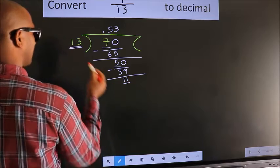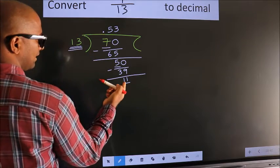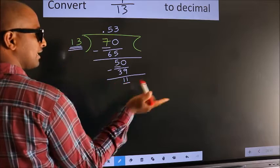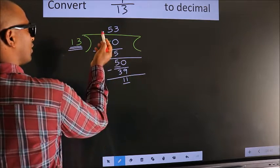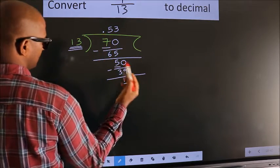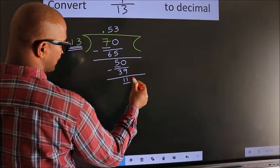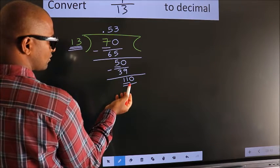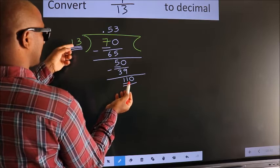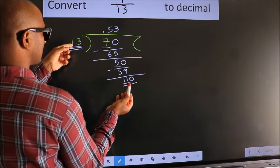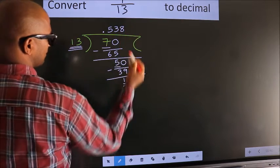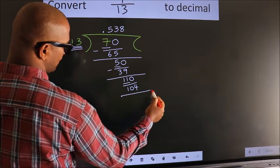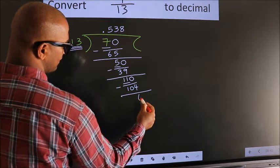Here 13. 11 is smaller than 13, and we already have the decimal, so we can directly take 0, making it 110. A number close to 110 in the 13 table is 13 eights — 104. Now we subtract and we get 6.